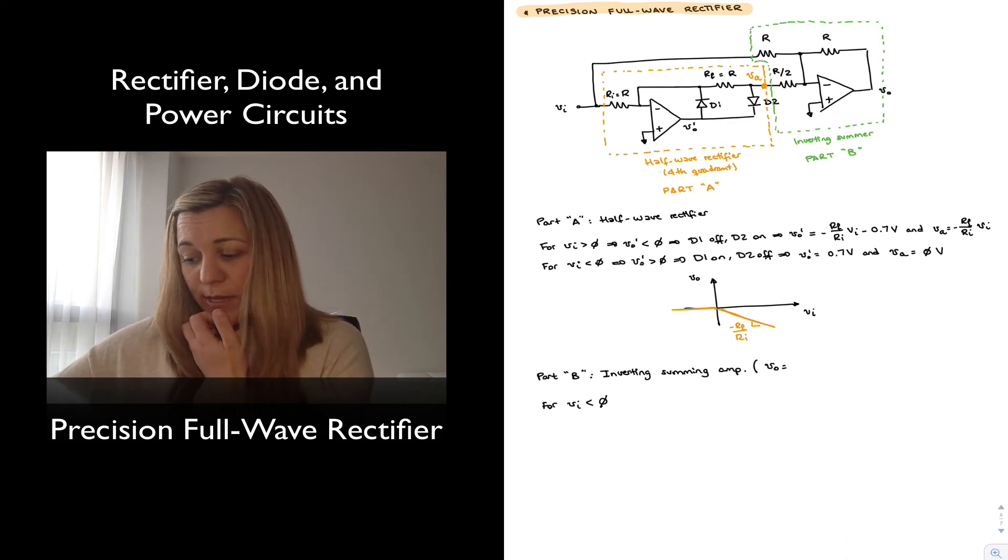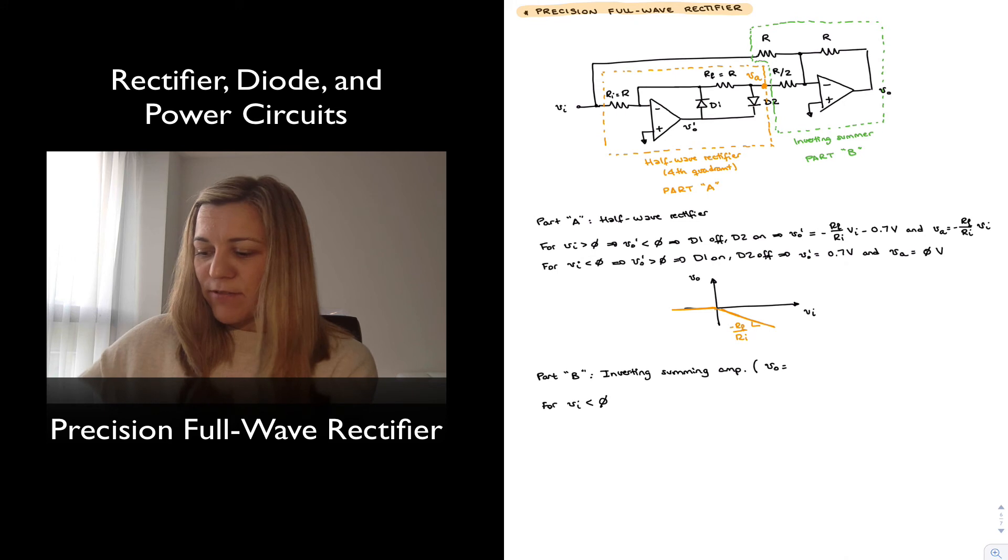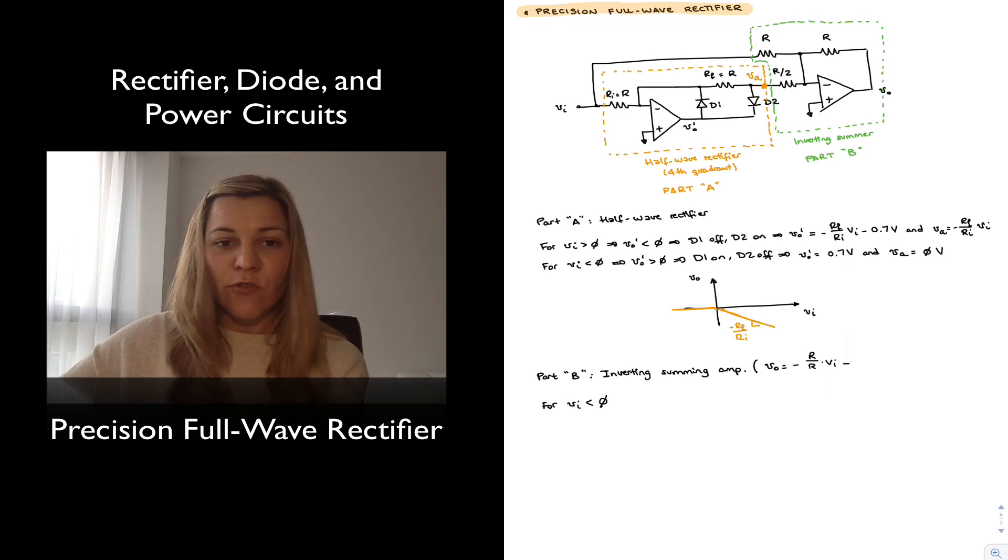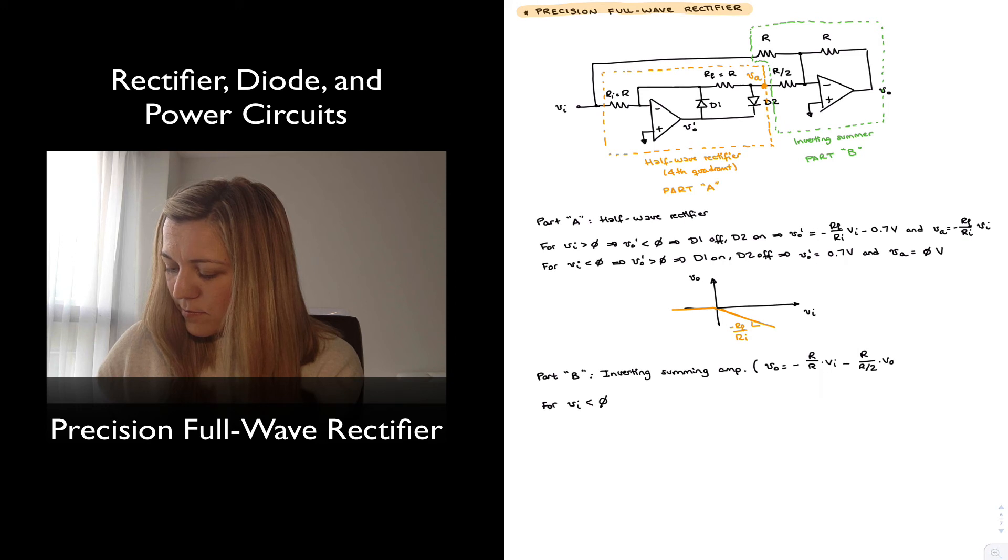Just generally speaking, it's going to provide a weighted sum of Vin and VA, which is the output from the half wave rectifier. And we can see that the weighting factor in the case of Vin is going to be R over R, so negative R over R times Vin minus R over R halves times VA. And so this is going to be equal to negative Vin minus 2 times VA, the output of this amplifier.